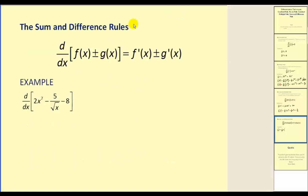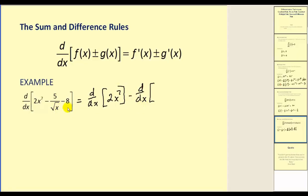The next rule: the sum and difference rule. The derivative of f of x plus or minus g of x with respect to x is equal to the derivative of f plus or minus the derivative of g. So essentially, if I want to find the derivative of this example, I just need to find the derivative of each term. I could rewrite this as three individual derivatives. Looking at the second term, I'm going to have to rewrite this in rational exponent form and also move it up to the numerator. So this is x to the one-half in the denominator; if I move it up, we're going to have five x to the power of negative one-half, minus the derivative of eight.